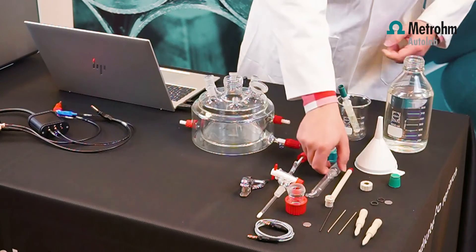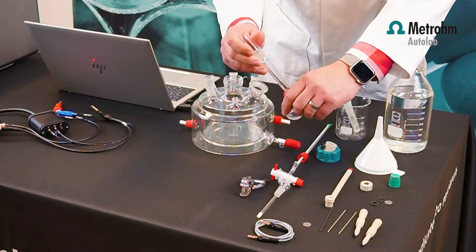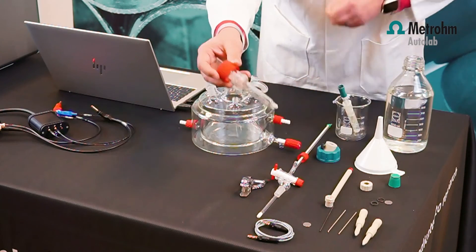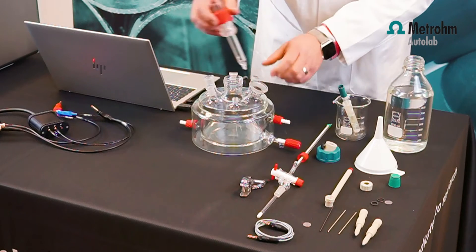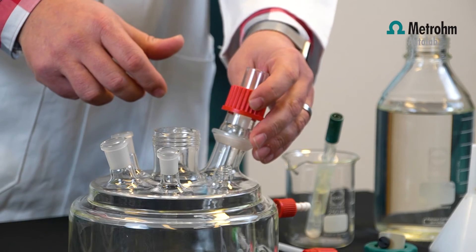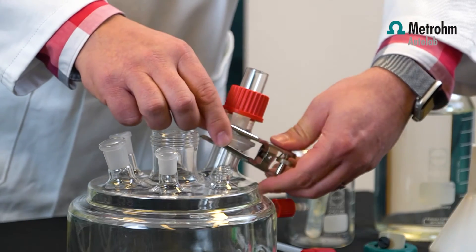The Luggin capillary is fitted with a spherical ball joint, so you can just insert it. You can put it into position in the corrosion cell.